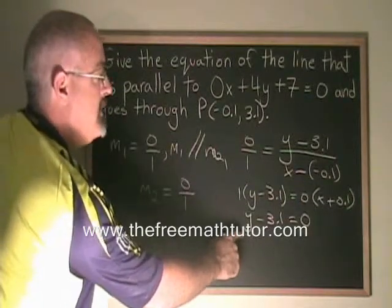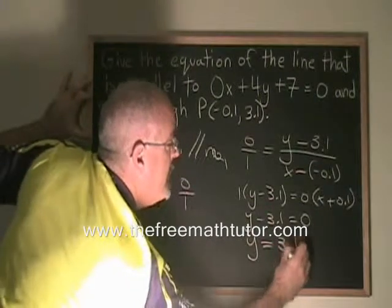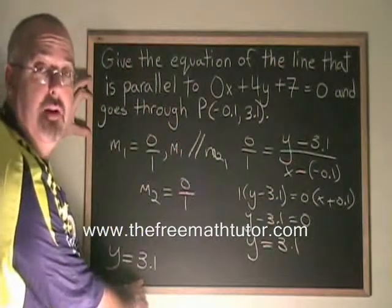Or, if I want it in slope-intercept form, I have y equals 3.1, the same answer that I knew I was going to get from the beginning.